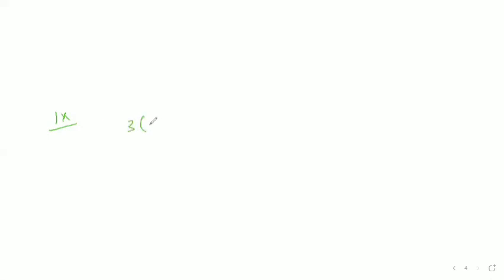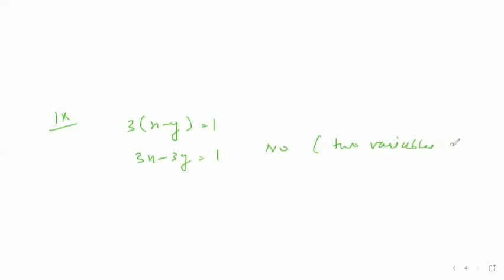Ninth part: 3x − 3y = 1. It is not a linear equation in one variable because two variables are there — x and y.